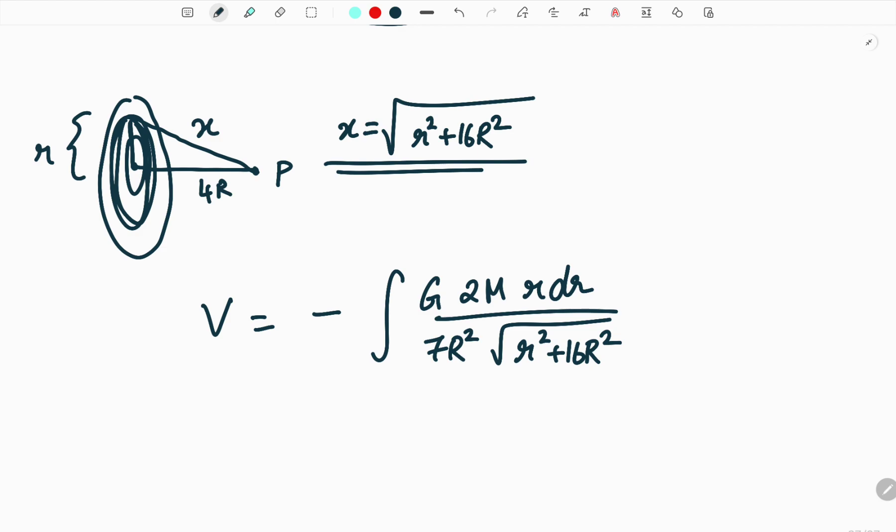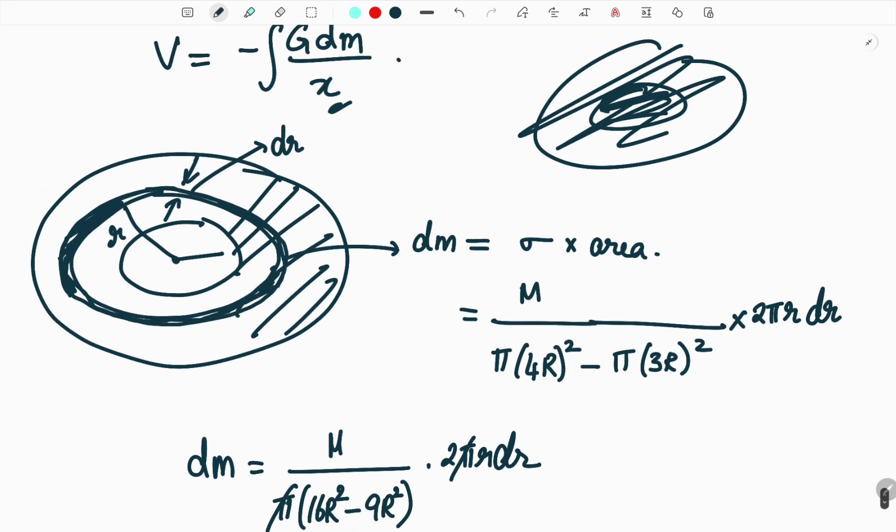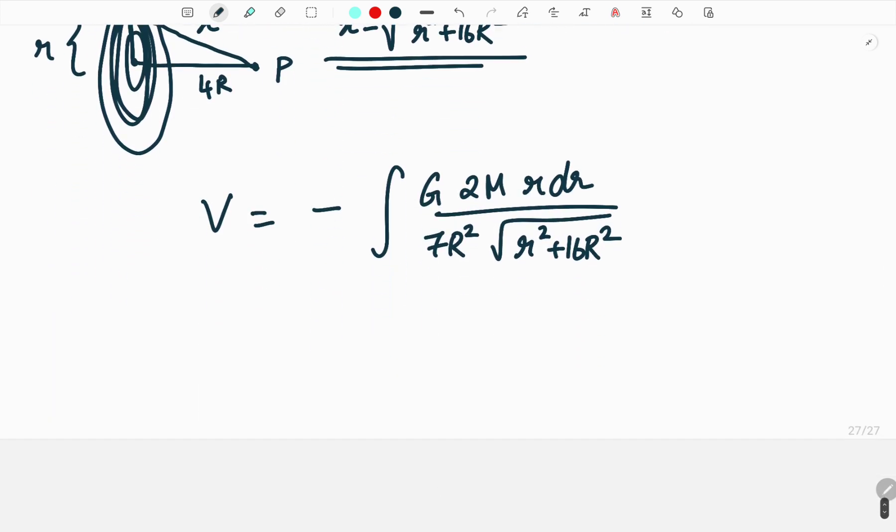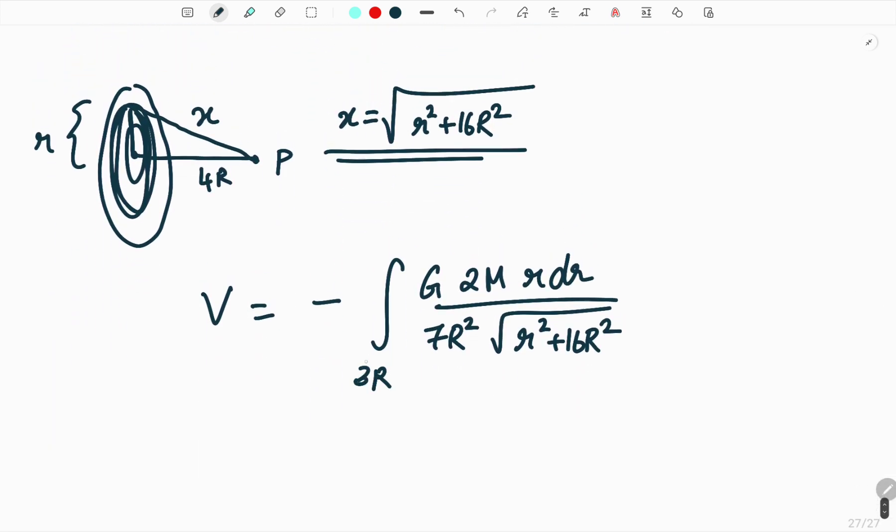Now when you have the integral we have to apply the limits. So this small element is going from 3r to 4r. So this point is 4r. So your element has to be integrated from 3r to 4r. So the limits will be lower limit is 3r and the upper limit is 4r.